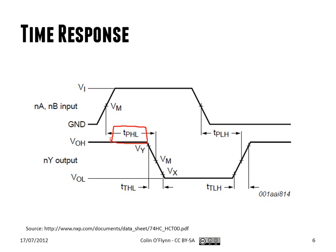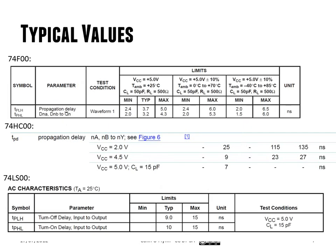They show you input-output changes and how much of a delay there is. So the delay isn't constant, even for a given gate. It'll vary with, for example, here we see there's actually two different numbers, depending on the direction, if it's going high to low or low to high.